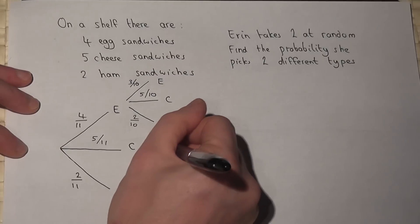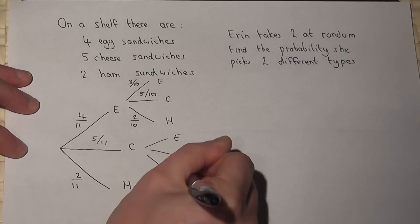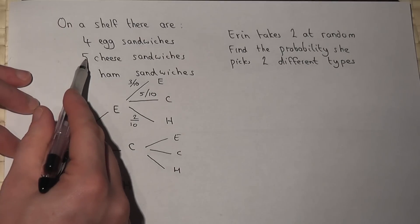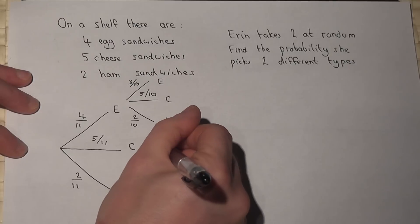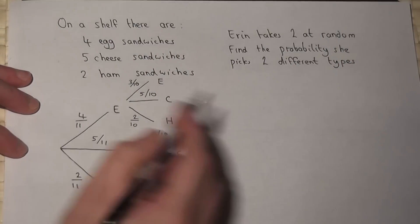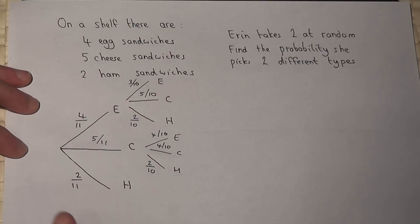Now we then go through with cheese. So cheese could then be egg, cheese, or ham. She picked a cheese sandwich, so there's one less cheese sandwich. Egg would be four out of ten, cheese would be now four out of ten since there's one less cheese on the shelf, and ham would still be two but two out of ten.